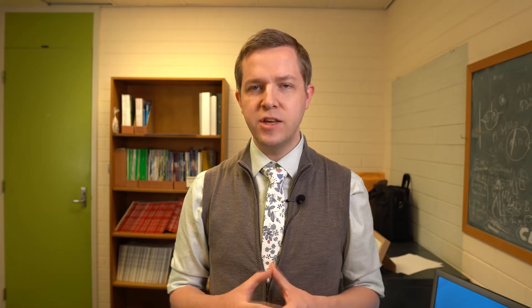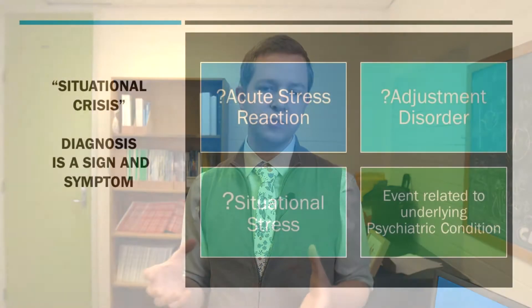Situational crisis is often used as a term to describe why someone has presented to hospital in the context of a mental health condition, either as yet undiagnosed or already known. However, situational crisis is classified as a symptom or sign and therefore is not a diagnostic term — it can't truly be used in an impression or assessment in clinical documentation. Instead, we can use diagnostic terms like acute stress reaction, adjustment disorder, or similar. You don't need to be 100% accurate from the start; you can express diagnostic uncertainty through qualifying terms. It's also important to link the presenting event with the underlying psychiatric or mental health condition, as that really helps complexity.